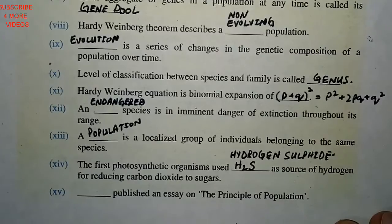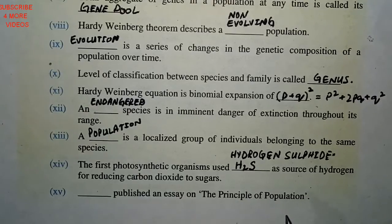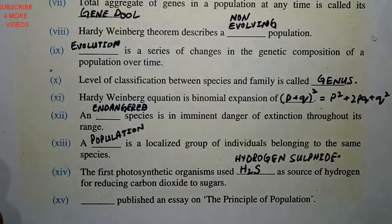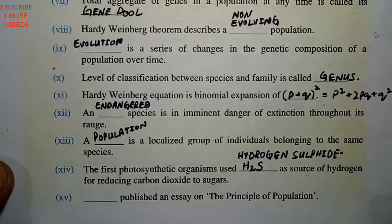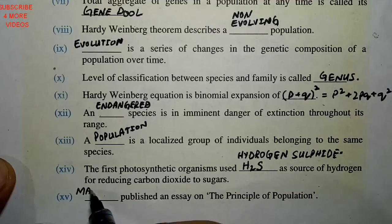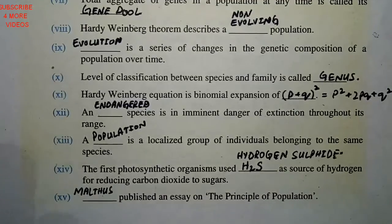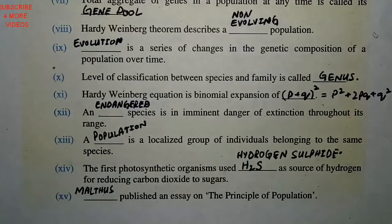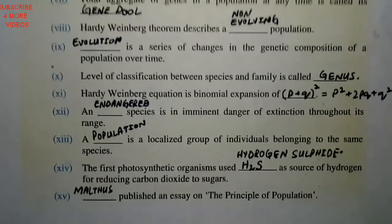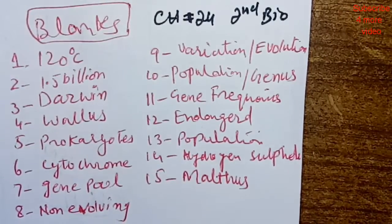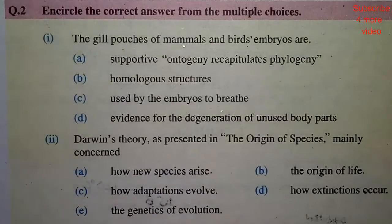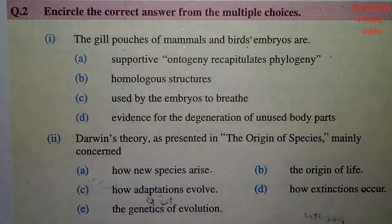Next, dash published an essay on the principles of population — the answer is Malthus. Now I will give you a screenshot to send to your friends. Let's move on to multiple choice questions.